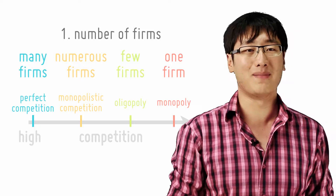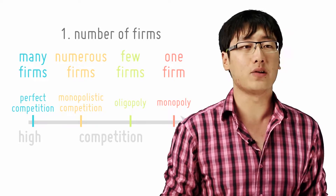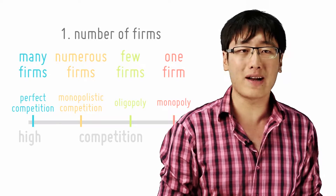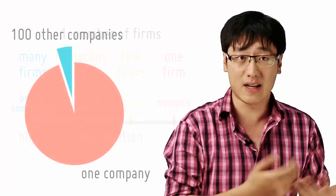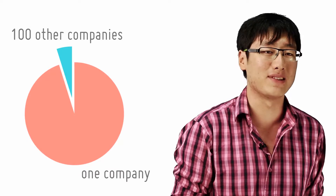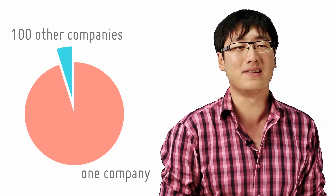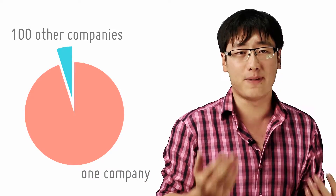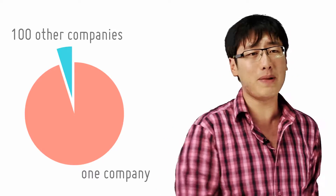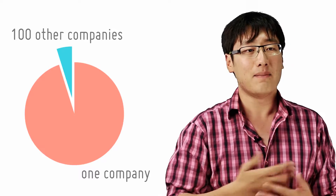So evidently, to measure the number of firms in the market, we simply count the number of firms. But does that always work? Let's say I have an industry where one company takes up 95% of the market share and the other 100 companies take 5%. So sure, I have 101 companies in the market, but does that mean it is perfectly competitive? If anything, it should be a monopoly because 95% pretty much takes out the entire market.